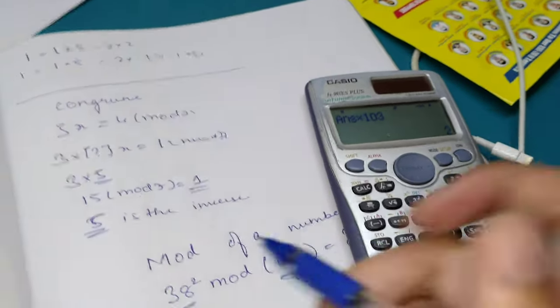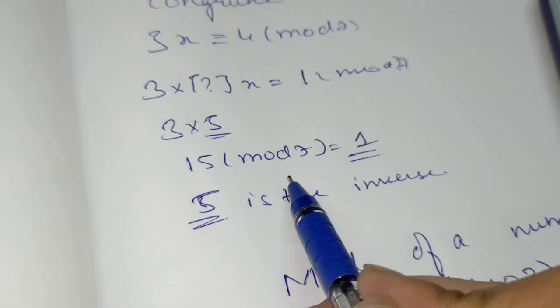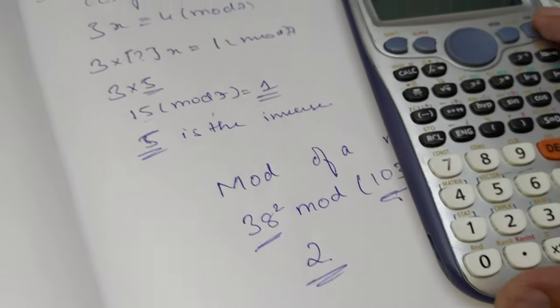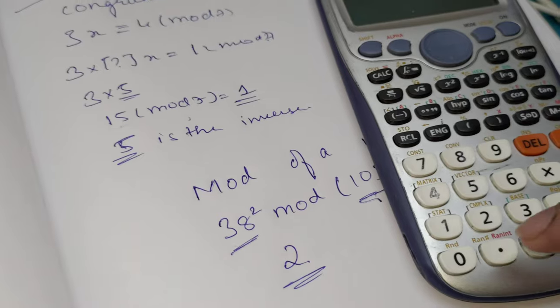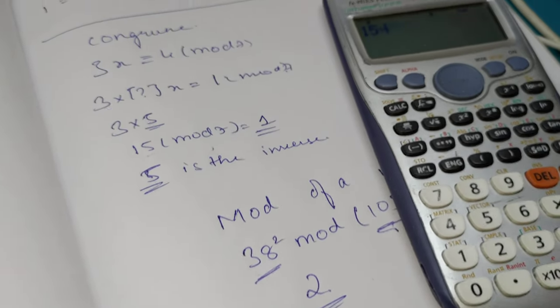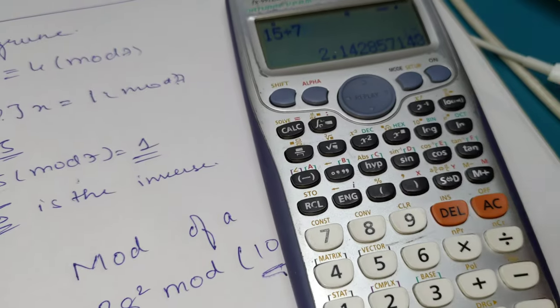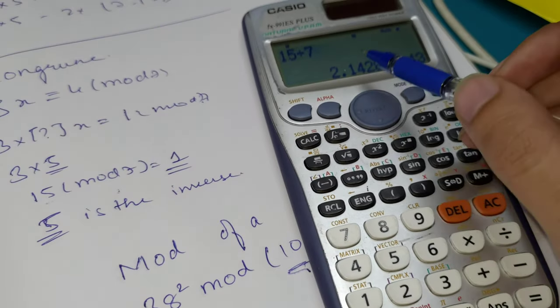For another example, let's say 15 mod 7. This is a very small number, but anyways, if you want to do 15 mod 7: 15 divided by 7, you will get 2.14.